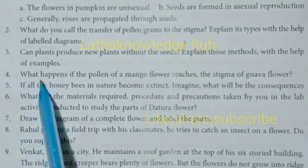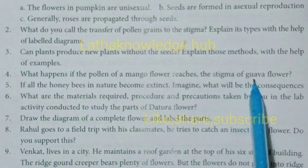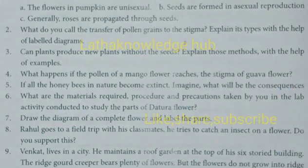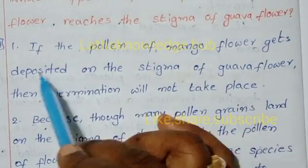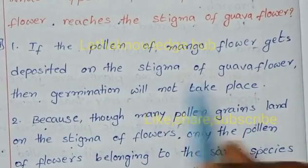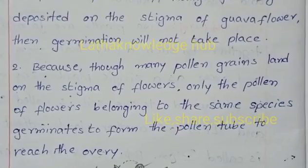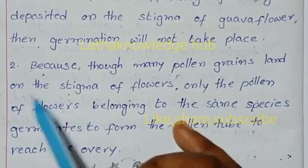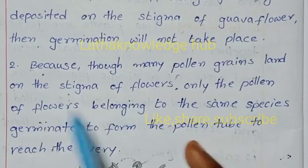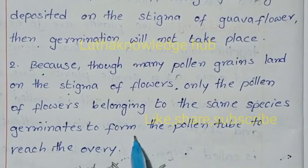Fourth question: What happens if the pollen of a mango flower reaches the stigma of a guava flower? If the pollen of a mango flower gets deposited on the stigma of a guava flower, then germination will not take place. Because though many pollen grains may land on the stigma, only the pollen of flowers belonging to the same species germinates to form the pollen tube to reach the ovaries.